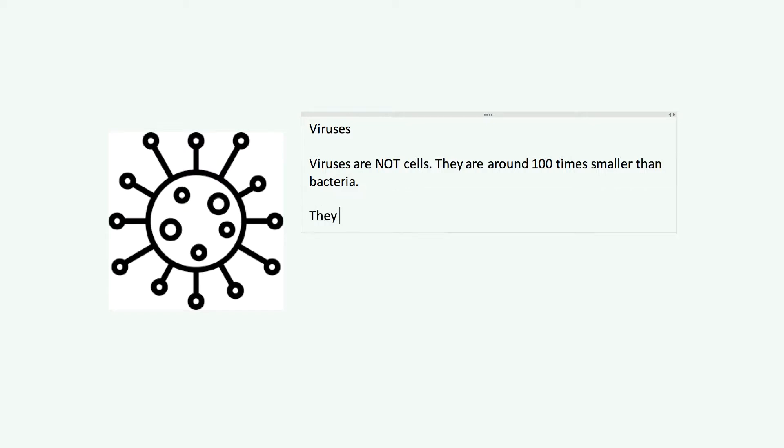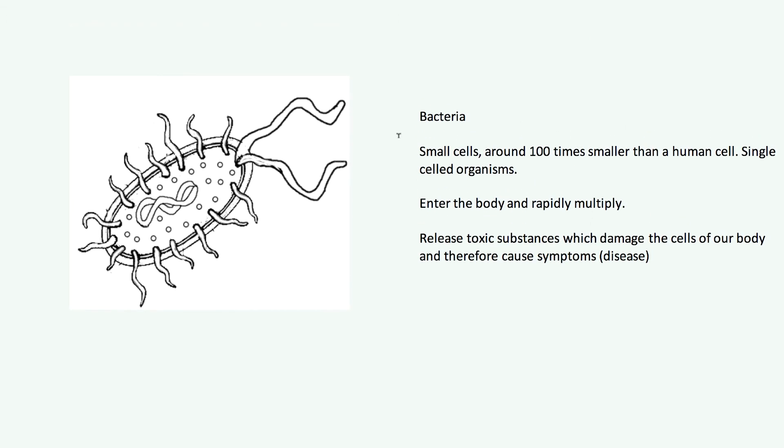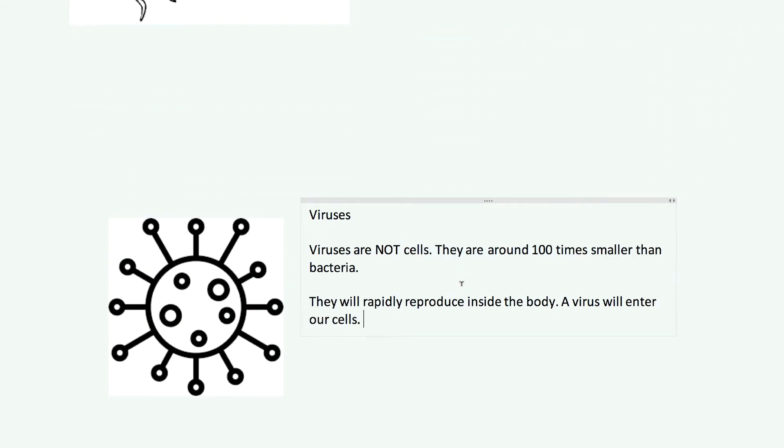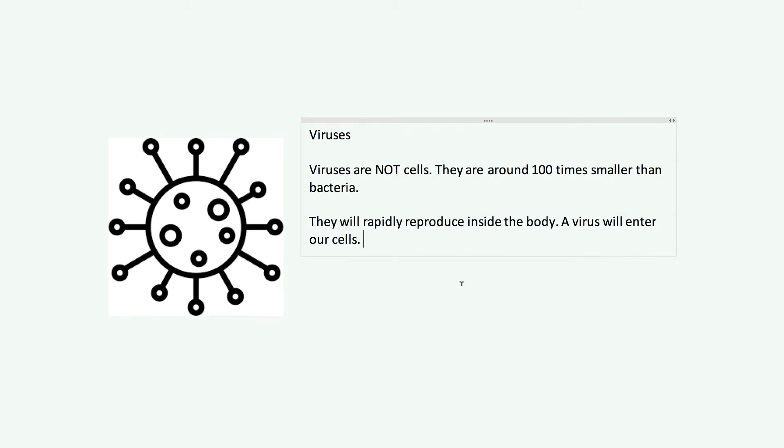They will though rapidly reproduce inside the body. A virus will enter our cells. Now, this is a key difference because bacteria will enter the body and they'll maybe live in the bloodstream or they'll go and live in your stomach or something like that. But they won't actually enter our cells, they're too big. Whereas a virus is so small that it can get inside our own cells. A bacteria is a cell itself, it doesn't need to. A virus is so small that it can actually enter our cells and that's how it works.